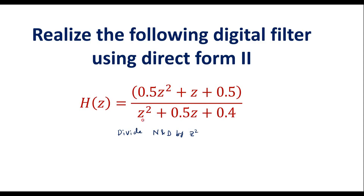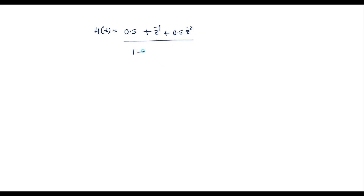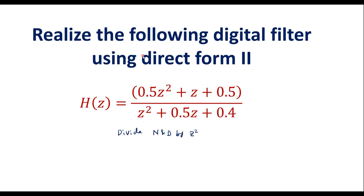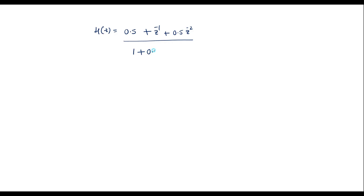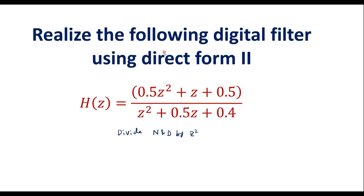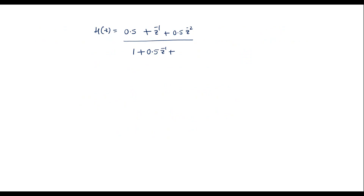Similarly, in the denominator we divide by Z squared as well. So Z squared by Z squared is 1, plus 0.5 Z divided by Z squared gives 0.5 Z power minus 1, plus 0.4 divided by Z squared gives 0.4 Z power minus 2. So the given H(Z) is now represented in this form.